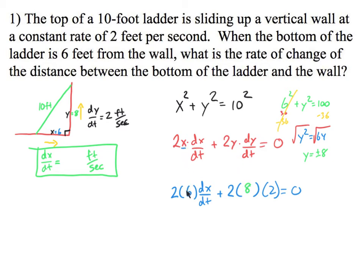So I know 8's Y, X is 6, I want to find this. So let's solve for this. So here's what it's going to end up looking like. 12 times dx/dt plus 2 times 8 times 2 is going to be 32, equals 0. I'm going to minus the 32 over. So I have 12 dx/dt is equal to -32.